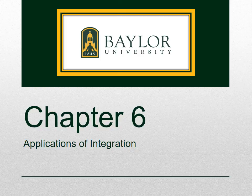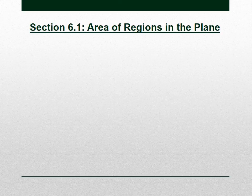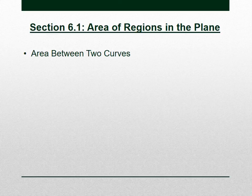Let's dive into 6.1. 6.1 is over areas of regions in the plane. We'll still be talking about areas using definite integrals like we talked about in 5.4, but here we'll be talking about areas you can get a little different way. Specifically, we'll talk about the area between two curves, or the area between the graphs of two different functions.